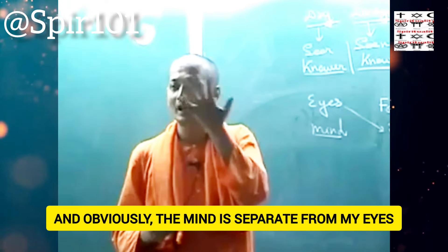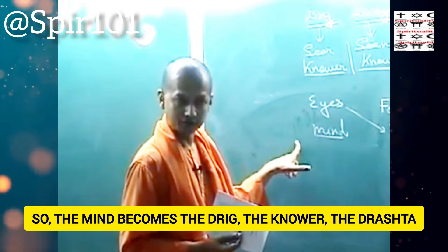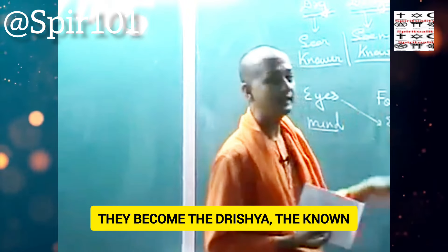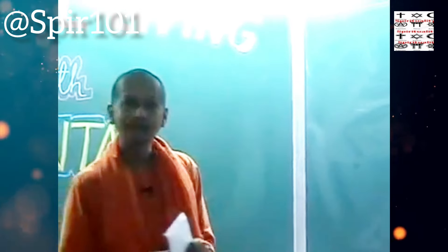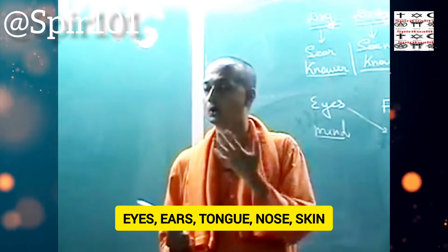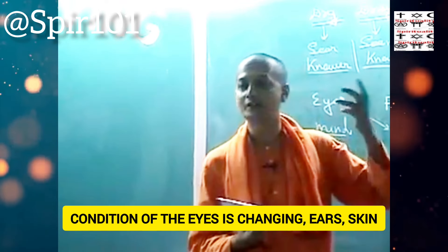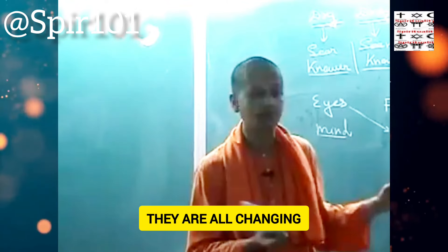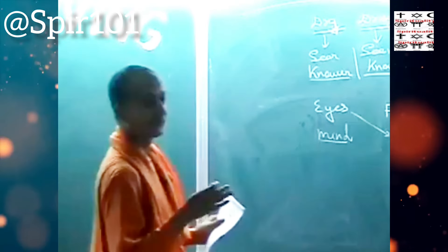By 'eyes' we can extend it to the ears, nose, tongue, and skin — all five sense organs. The same principle holds: the mind can know the sense organs, so the mind becomes the drig, the knower, and the sense organs become the drishya, the known. The same two corollaries apply: all the different sense organs are known by the same mind, and their changing conditions are all known by the same mind.